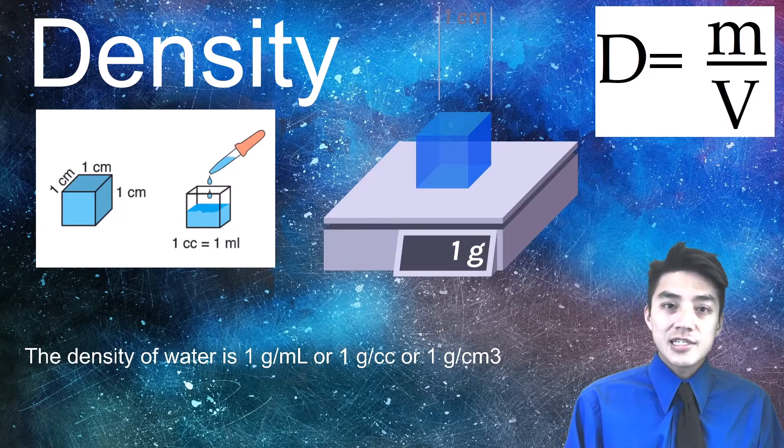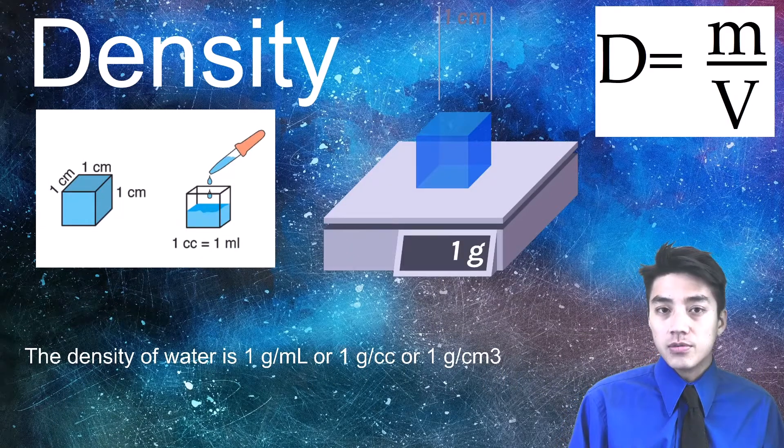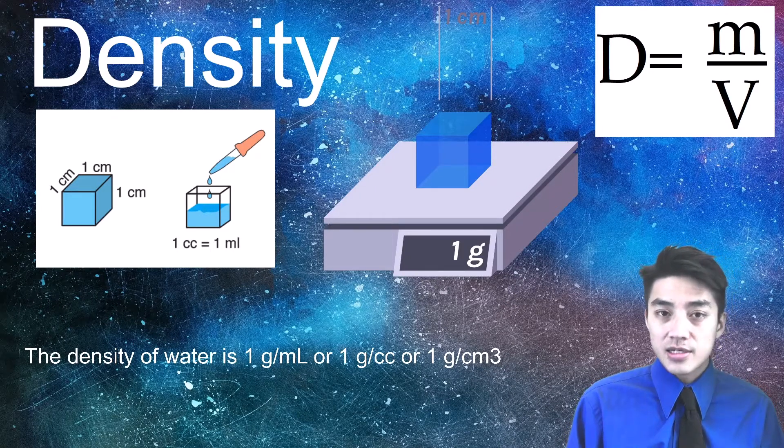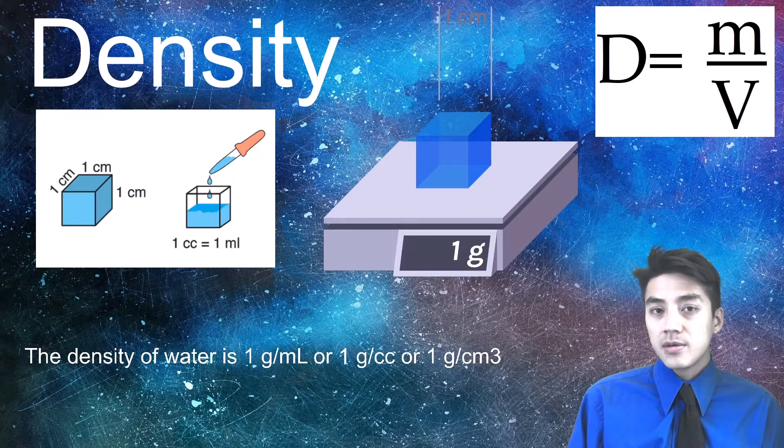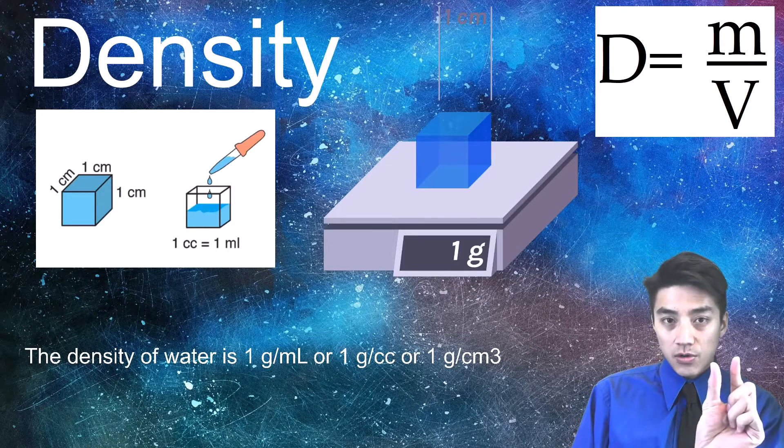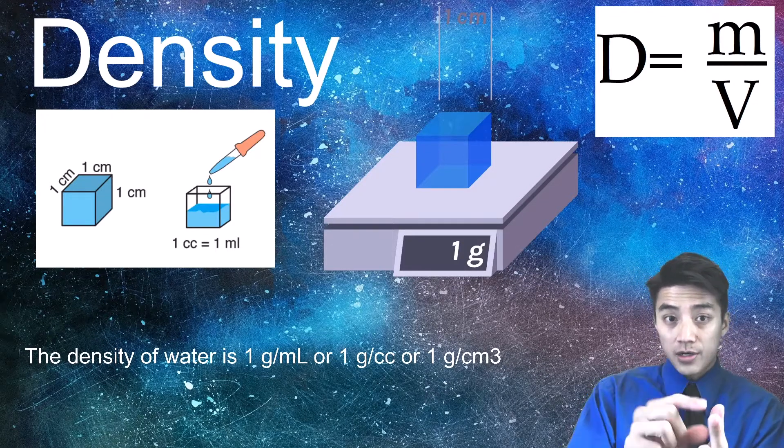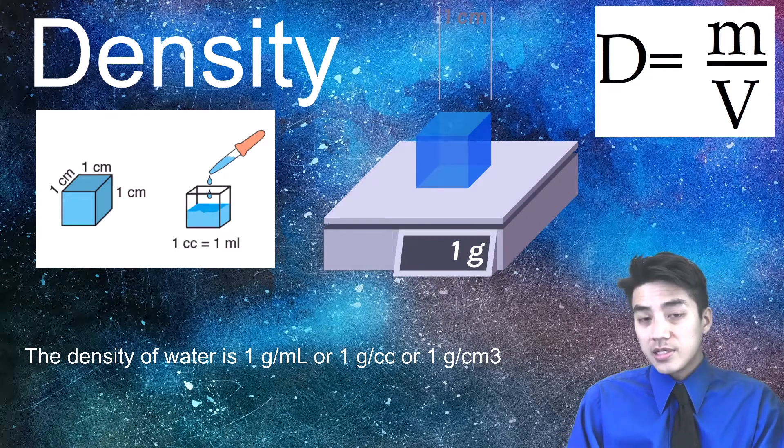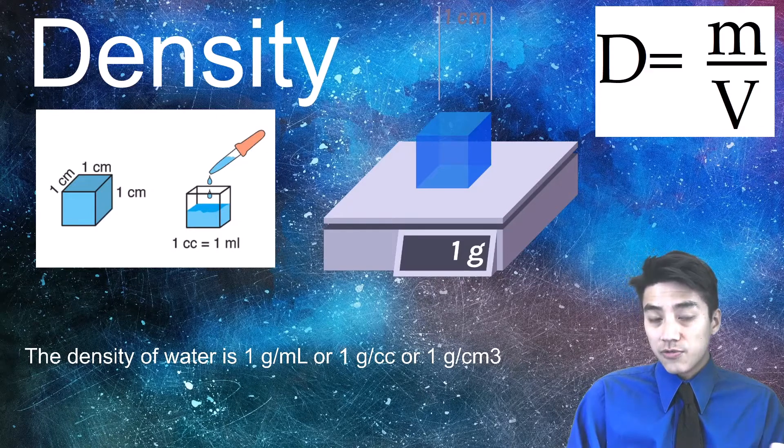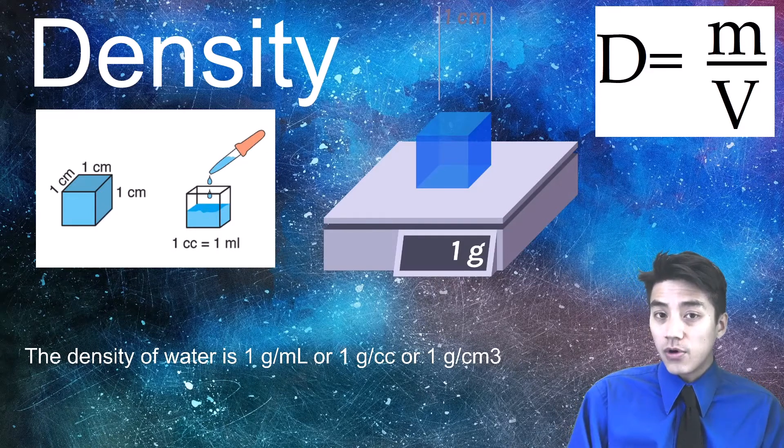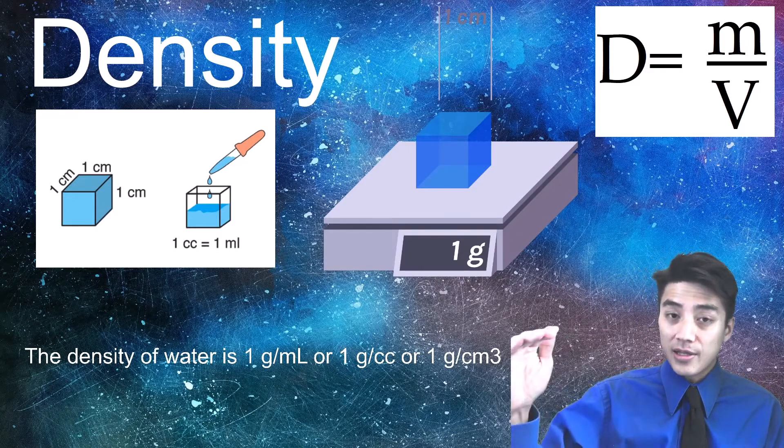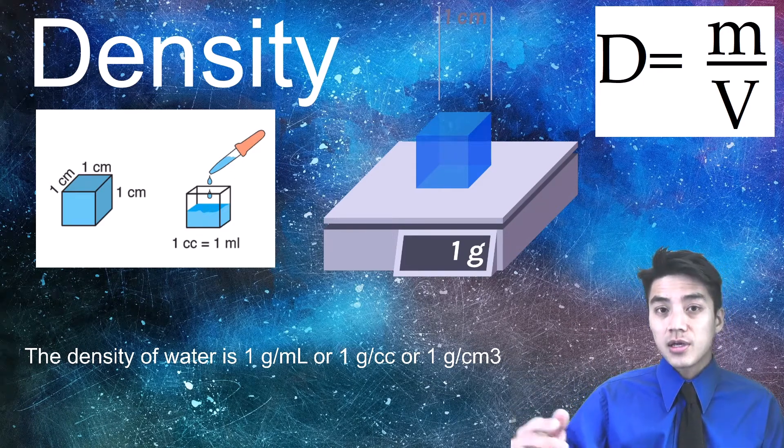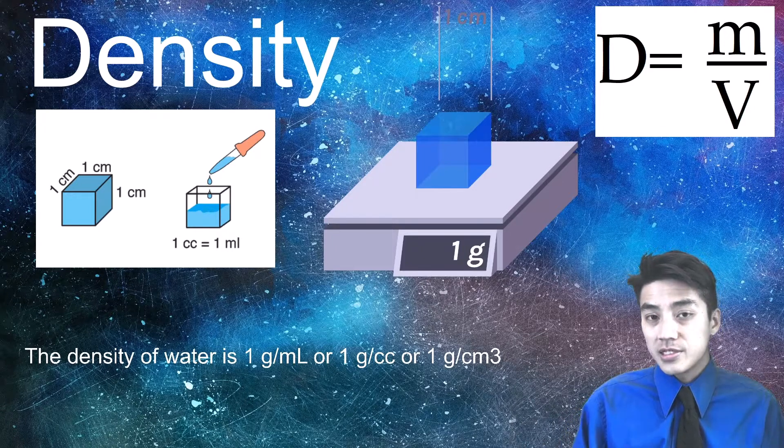The formula for density is mass divided by volume. The easiest way to understand density is to understand the density of water. We say that the density of water is 1, because 1 cubic centimeter of water, so pretend you have a cube of water like in that image right there, and then you pour that water onto a scale, it would weigh exactly 1 gram. Because the formula is mass divided by volume, if you take 1 gram and divide it by 1 milliliter, which is the same thing as 1 cubic centimeter, you would just get 1 for the density of water.